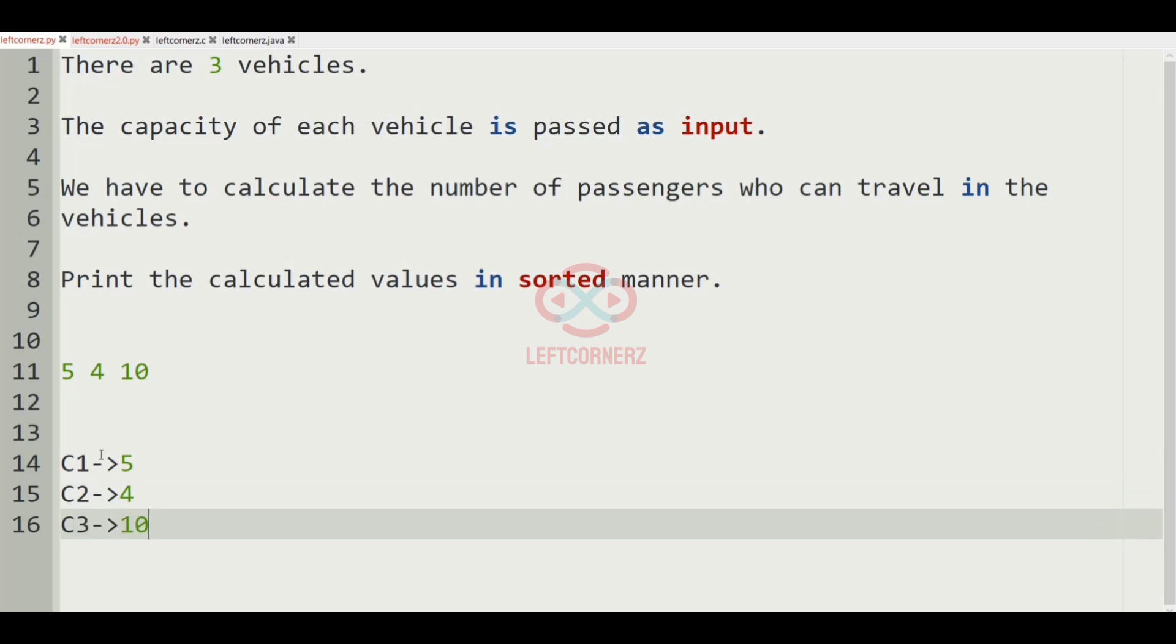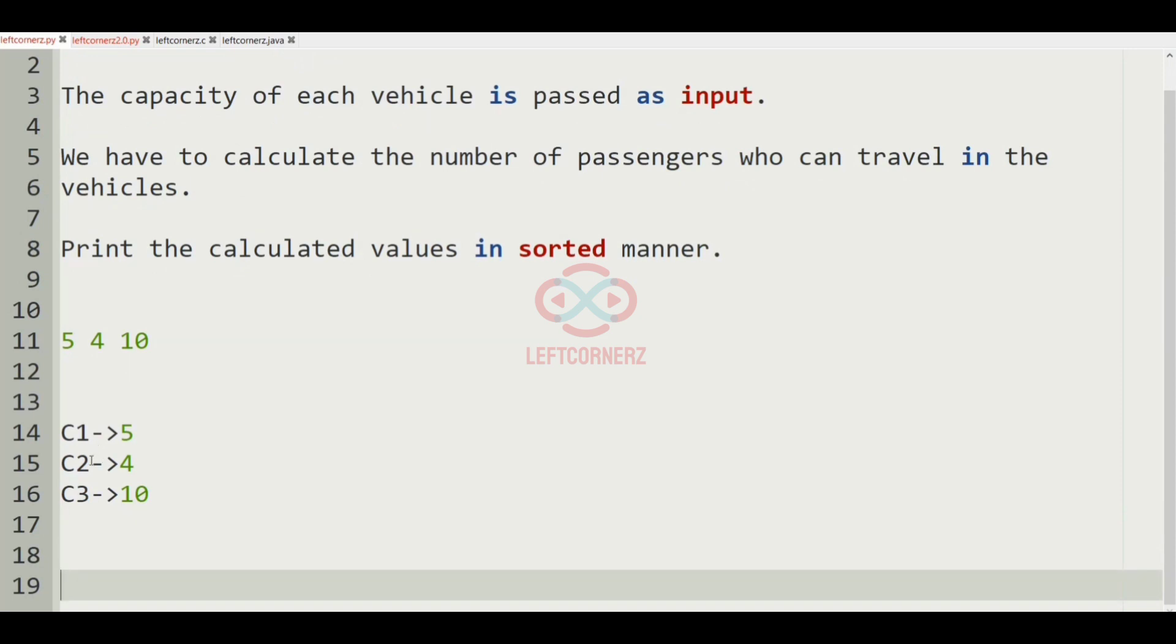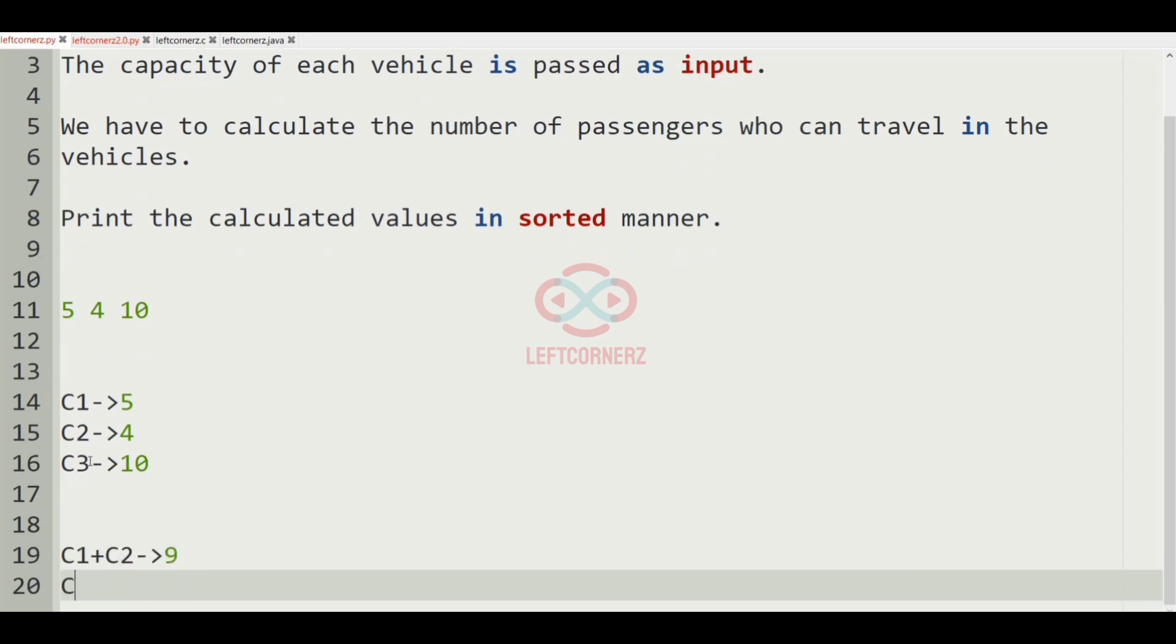And now we have to find all possible combinations that we can form from C1, C2, and C3. So the first combination could be C1 plus C2 gives 9, and C1 plus C3 which gives 15.